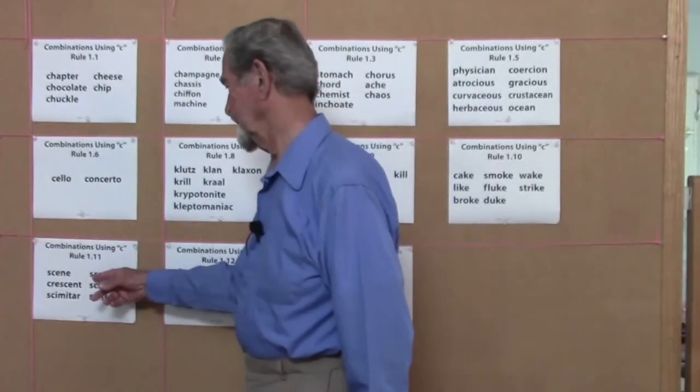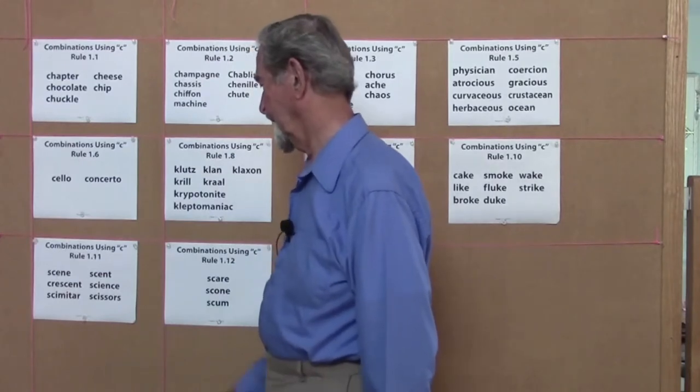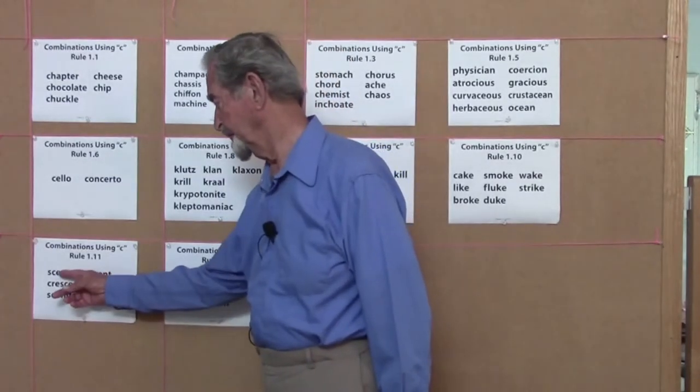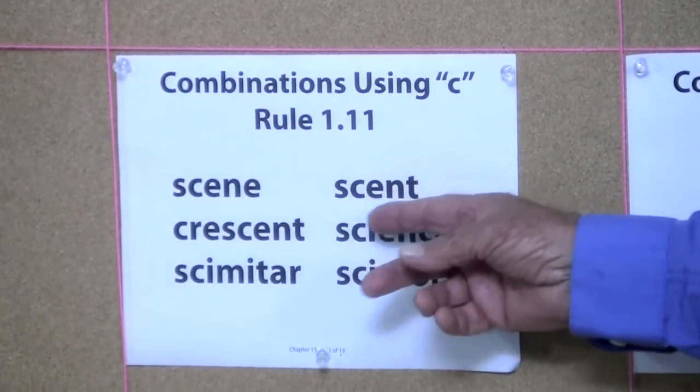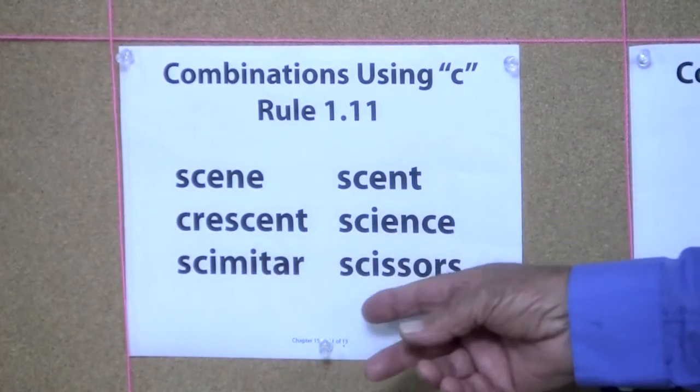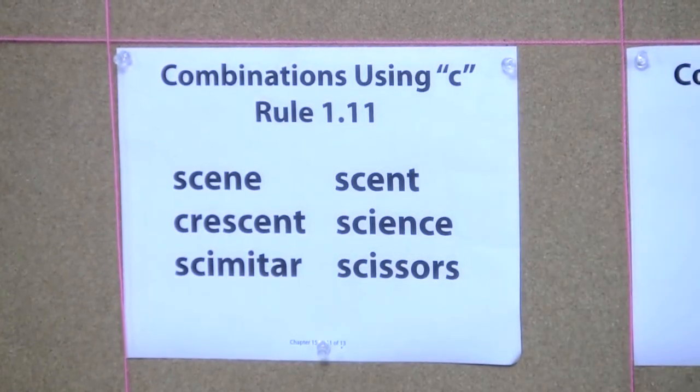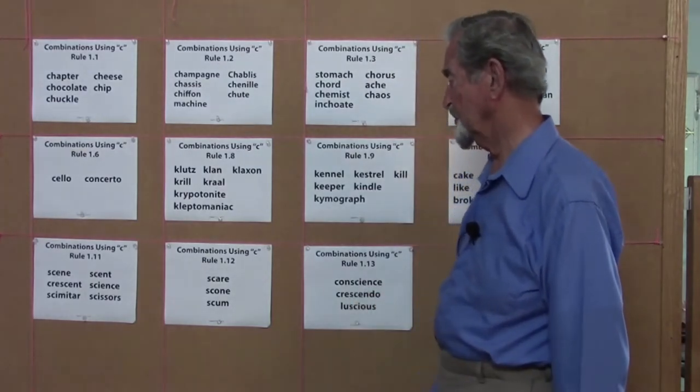This combination shows S and C together. This only works before the letters E and I: scene, sense, crescent, science, scimitar, scissors. Before the I, you can do SC.